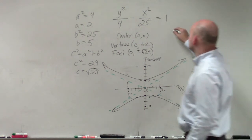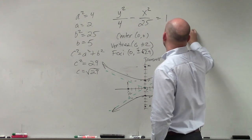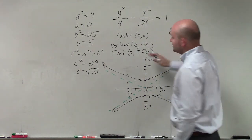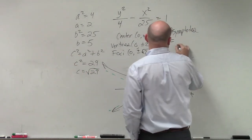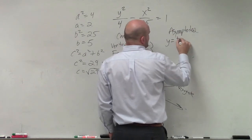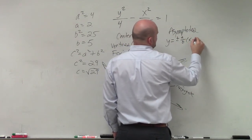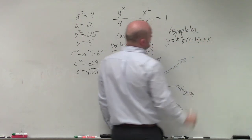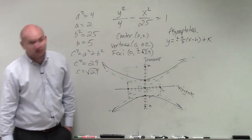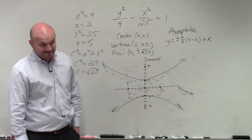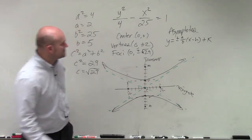I did ask for your asymptotes, which, since this is a vertical transverse axis, the equation per what you're given, is y equals plus or minus a over b times x minus h plus k. Do we know a? Do we know b? Do we know h? And do we know k? Yes, it's not that bad, right? a over b, so 2 fifths.